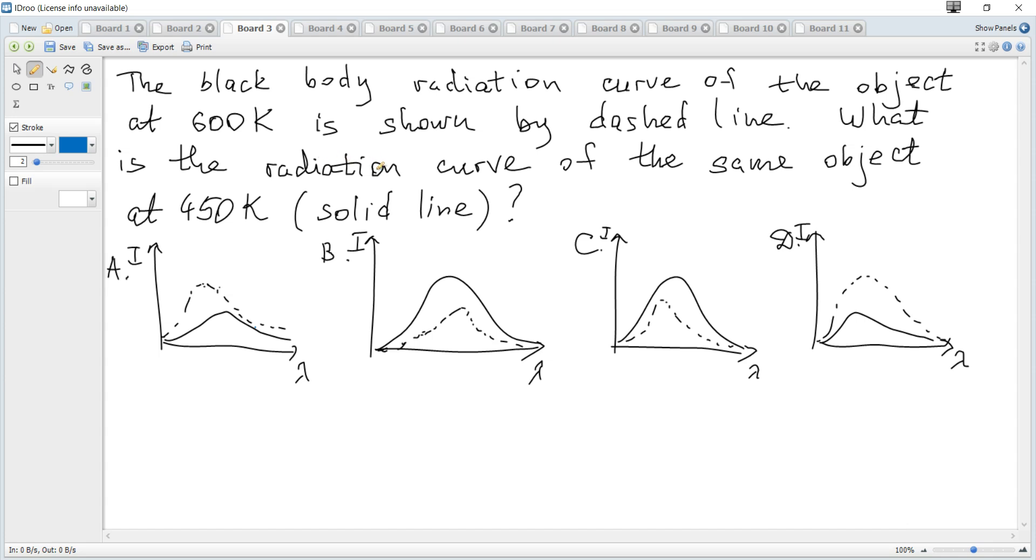The black body radiation curve of the object at 600 K is shown by dashed line. What is the radiation curve of the same object at 450 K, shown by solid line?